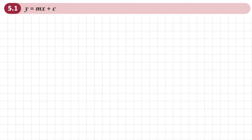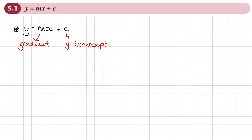This is the first section of chapter 5 on straight line graphs, and this is on y equals mx plus c. You would have come across y equals mx plus c at GCSE, where m represents the gradient of the line and c represents the y-intercept of the line.